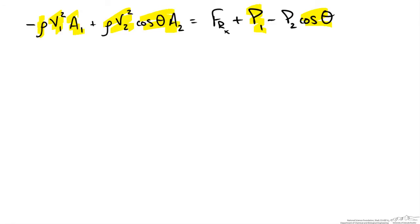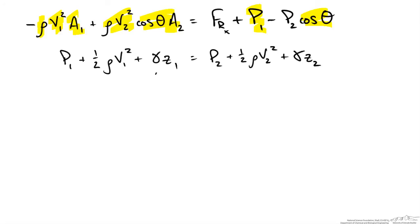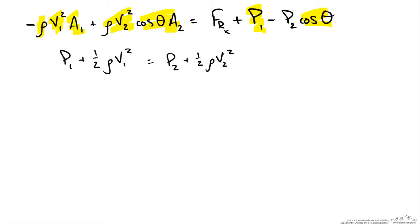To determine the pressure at point 2 we use an energy balance — specifically the Bernoulli equation, which states that the energy at point 1 equals the energy at point 2. Since viscous effects are negligible we do not worry about that term. We also cancel out the elevation terms because gravitational effects are negligible, leaving only the pressure and velocity terms. With density and velocities at points 1 and 2 as well as p1 known, we can solve for p2 and insert it into our equation.